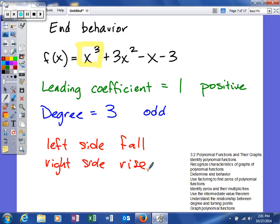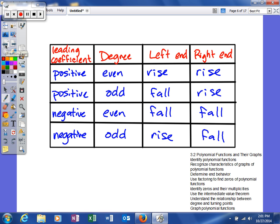One thing you need to know is that any time your degree is odd, the two sides will differ in the way they are going. One will fall, one will rise. However, if your degree is even, they will have the same characteristic. Either they will both go up or they'll both go down.